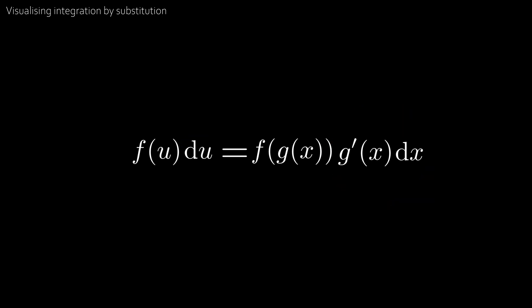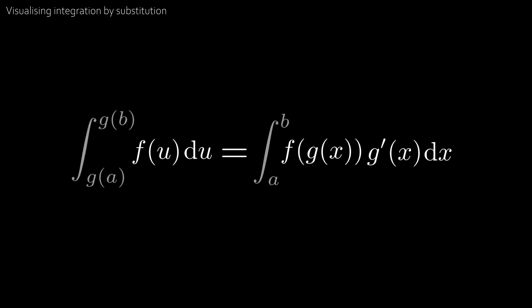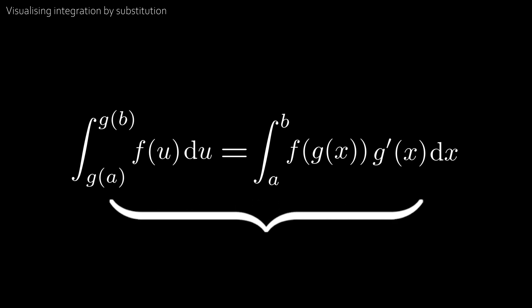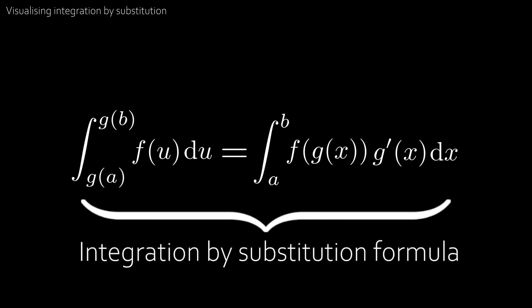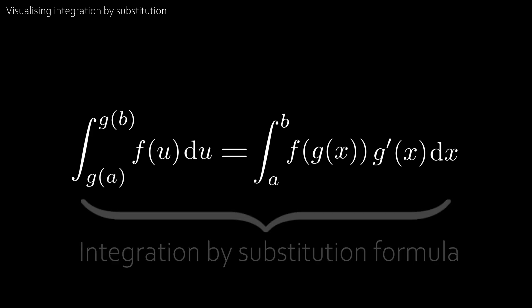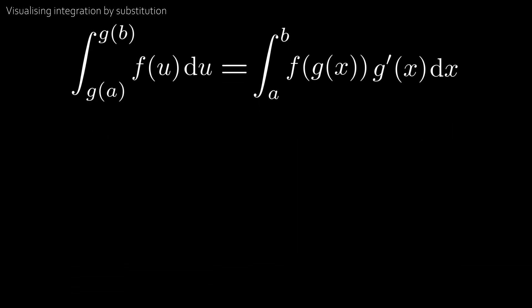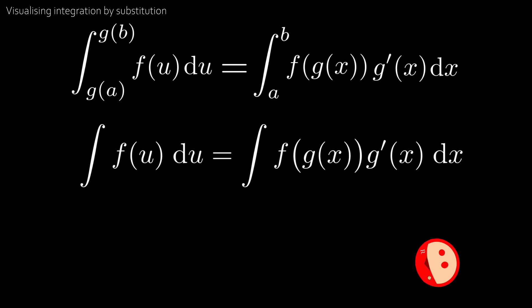We can see that the width of the rectangle has been scaled by g dash. If we add up all the extremely small rectangles, this is the same as integrating between the respective bounds. This is our integration by substitution formula, and naturally we can extend this formula to indefinite integrals.